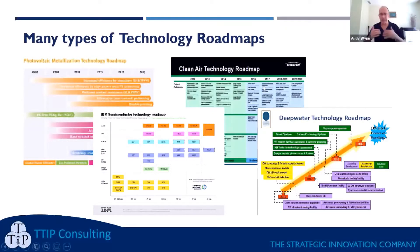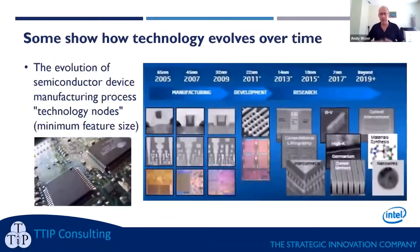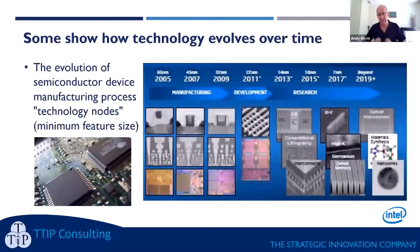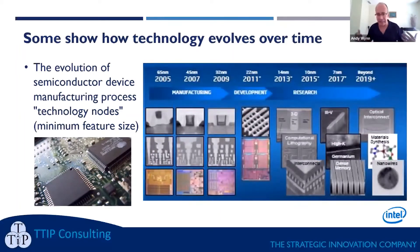These roadmaps from DuPont, IBM, Tenneco and others all follow a similar theme: they're showing how the technology of that business is going to evolve over time. In effect, it's a summary of the R&D programs they have running in their business.